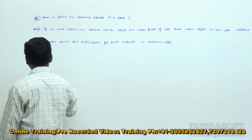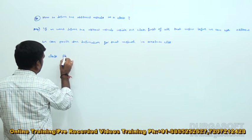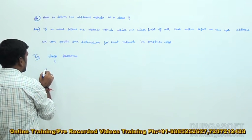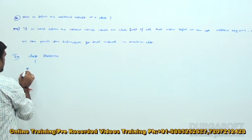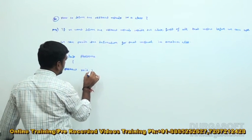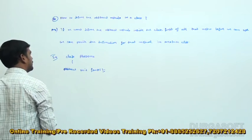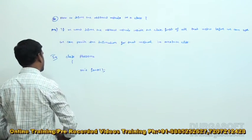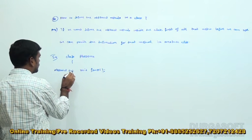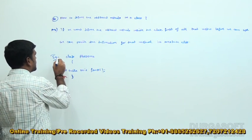For example, class AbsDemo. Under that, I am defining the abstract methods. Abstract void functionA. Like this we can define. Otherwise, abstract public — we can define abstract public. But this class must also be an abstract class.